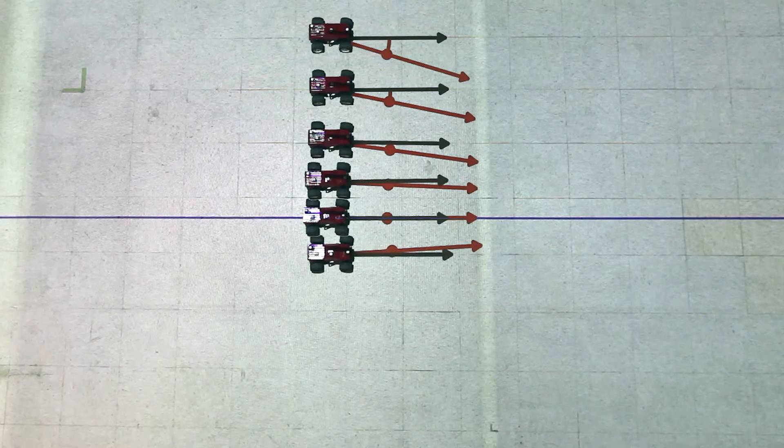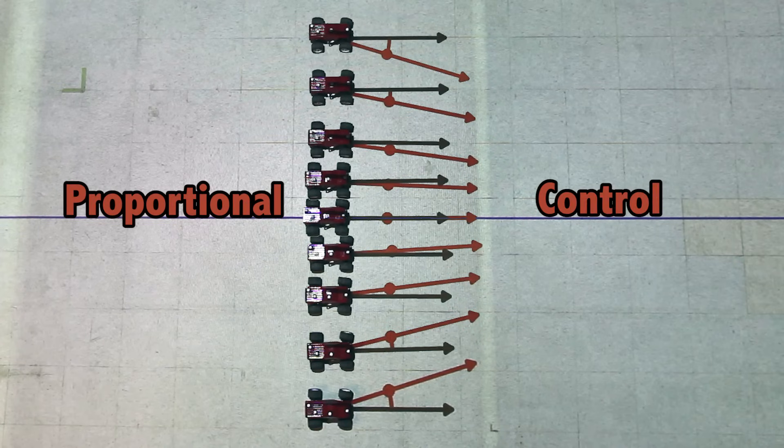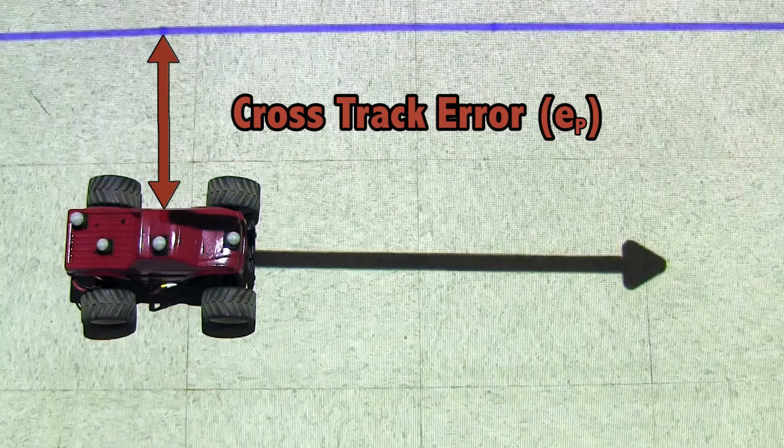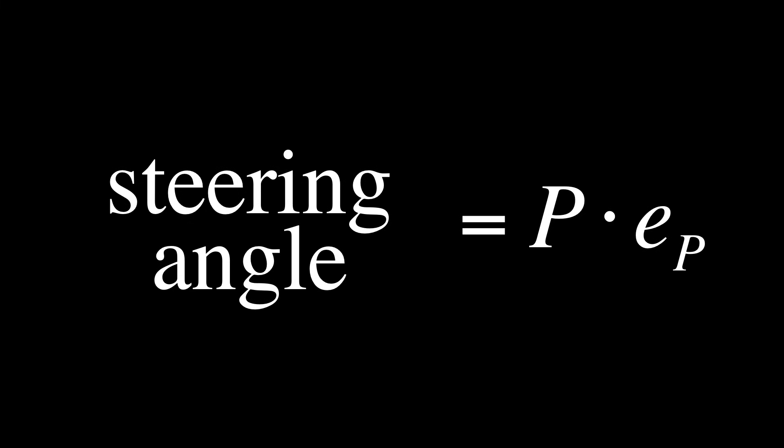One way to set the steering wheel angle is to use what is called proportional control. Rather than turn the wheel a fixed amount, proportional control steers harder the further away we are from the desired trajectory. We take a measurement called the cross-track error to define how far away from the desired trajectory the vehicle is. Therefore, the steering angle we use is this cross-track error multiplied by a scaling factor called the proportional gain.